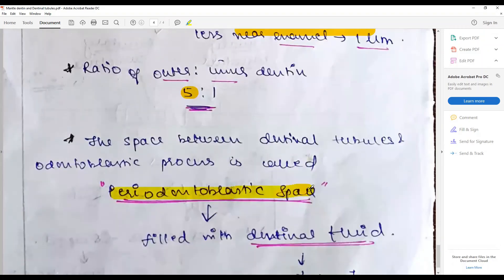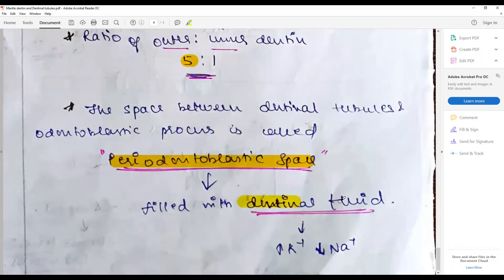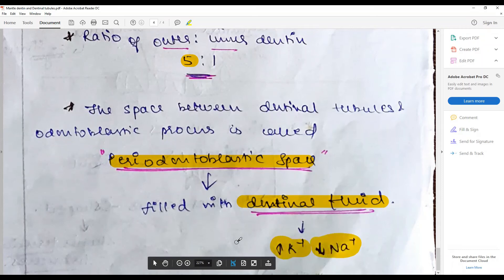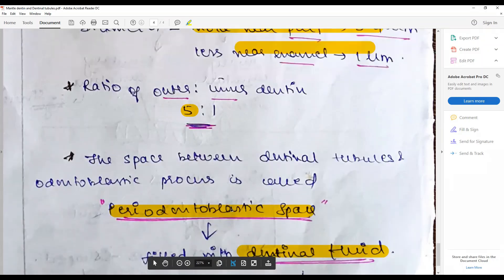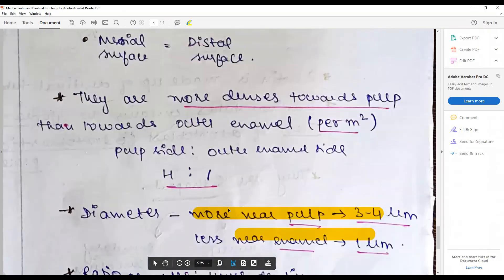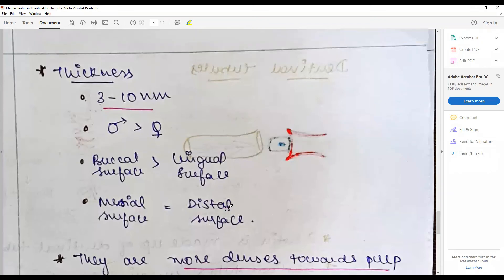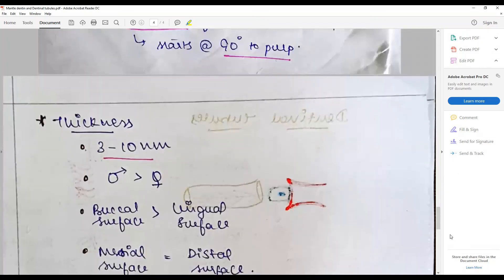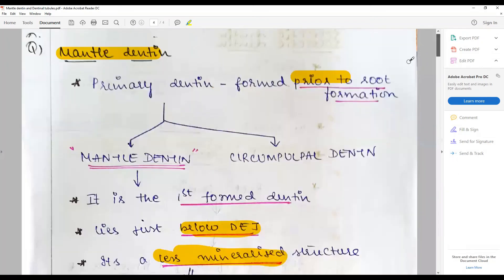Filled with a lymph called dentinal fluid or dental lymph that has higher amount of potassium and lower amount of sodium. It is this exchange that facilitates the movement of the dentinal lymph and facilitates the hypersensitivity reaction or sensitivity of the tooth.